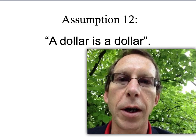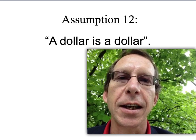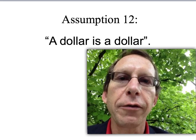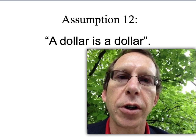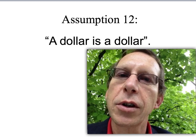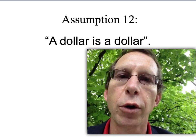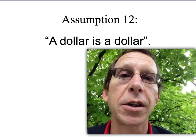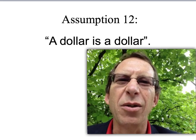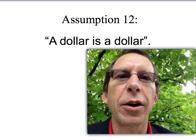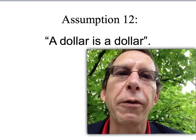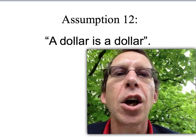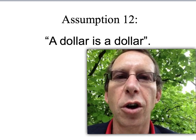What the assumption actually says is: if you have a rich person standing next to a poor person and you take a dollar from the poor person's pocket and give it to the rich person, under the dollar is a dollar assumption there's been no change in welfare. I suspect most people watching this, and indeed most economists, would say no — we would prefer to have a dollar going from the wealthy person to the poor person, with some redistribution going on. So why do economists use the dollar is a dollar assumption?